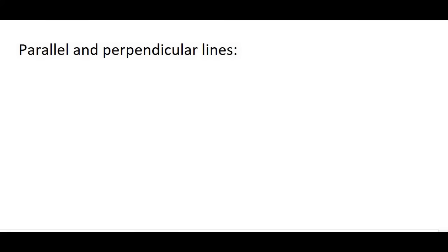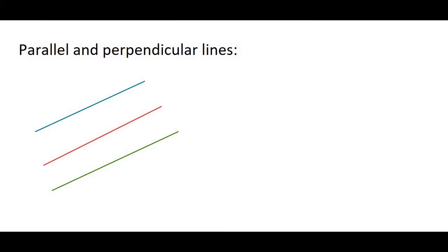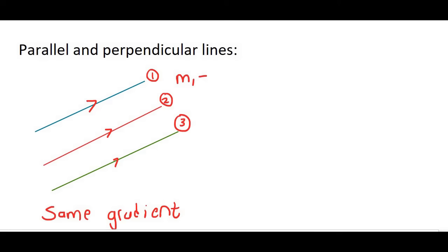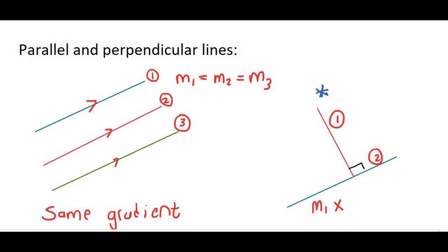The next thing we're going to talk about is parallel and perpendicular lines. The three lines drawn here are parallel, and what's important is that parallel lines have the same gradient — so gradient 1 equals gradient 2 equals gradient 3. These two lines over here are perpendicular; specifically, they form an angle of 90 degrees with each other. Mathematically, when two lines are perpendicular, multiplying their gradients always equals minus 1. So the gradient of line 1 multiplied by the gradient of line 2 always gives minus 1.